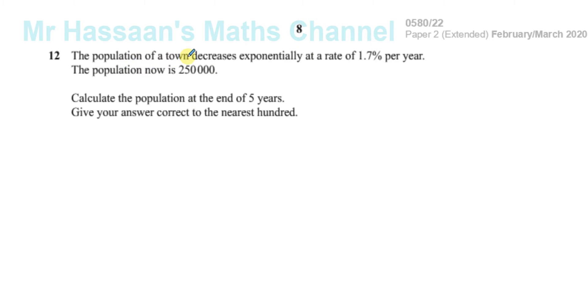It says the population of a town decreases exponentially at a rate of 1.7% per year. The population now is 250,000. Calculate the population at the end of five years. Give your answer correct to the nearest 100.